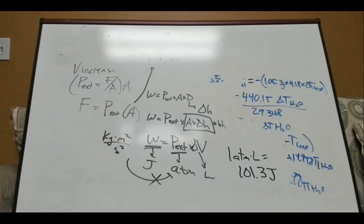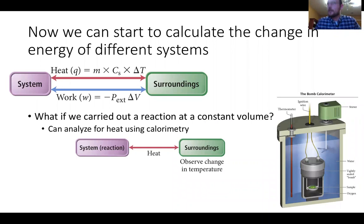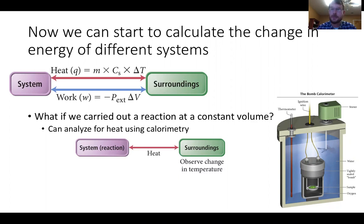Internal energy of a system is the sum of work and heat, constantly being transferred between system and surroundings. If we carry out a reaction at constant volume, then ΔV = 0, so work = P × ΔV = 0. We don't have to worry about work — all we find is heat. At constant volume, we can measure the heat change between system and surroundings using change in temperature. One way to do this in the lab is the bomb calorimeter.